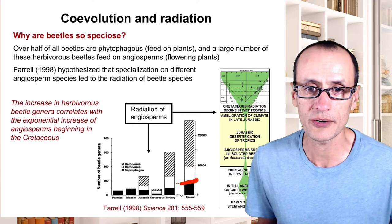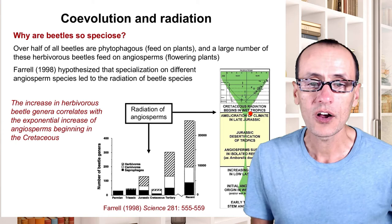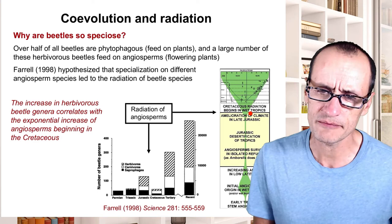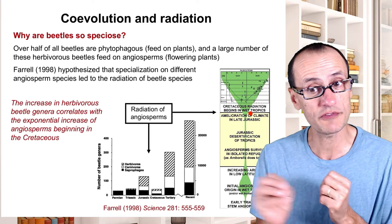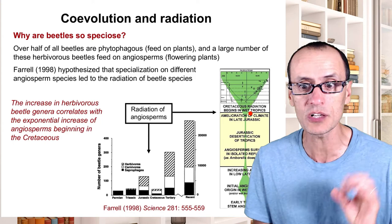This was coincident with the timing of when beetles also started to diversify. You can start seeing some synchrony between the diversification rates of plants and the diversification rates of insects, herbivorous beetles in particular.